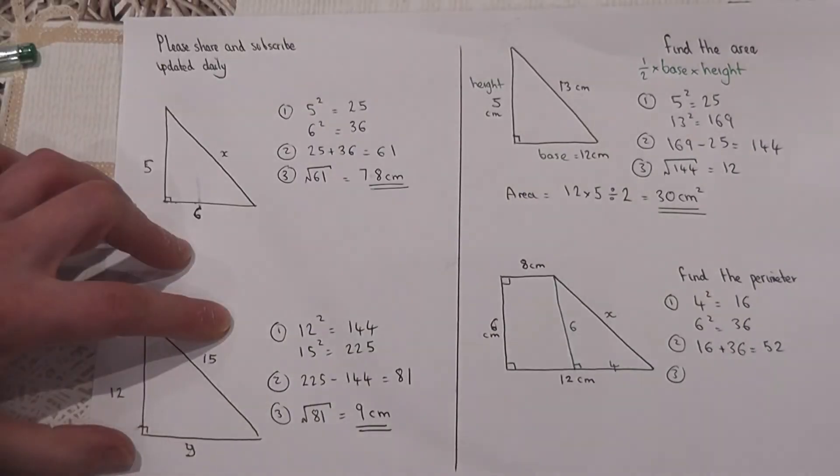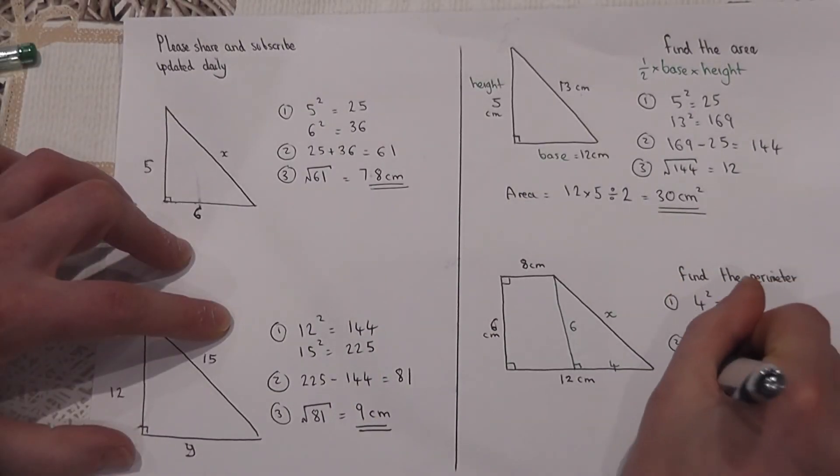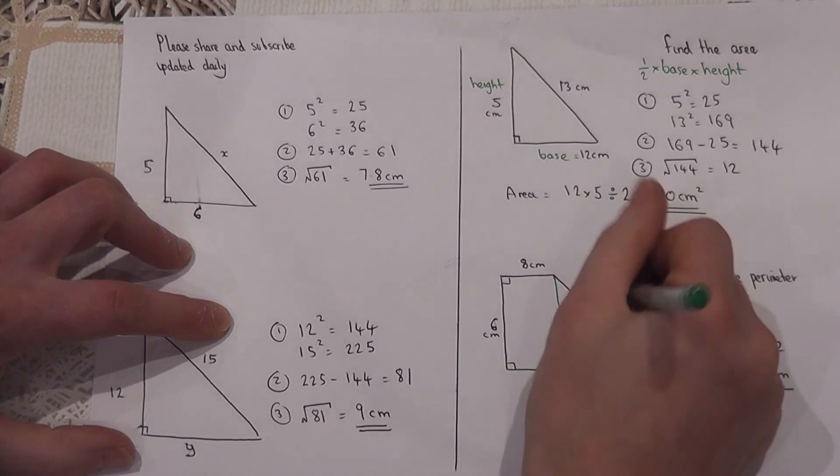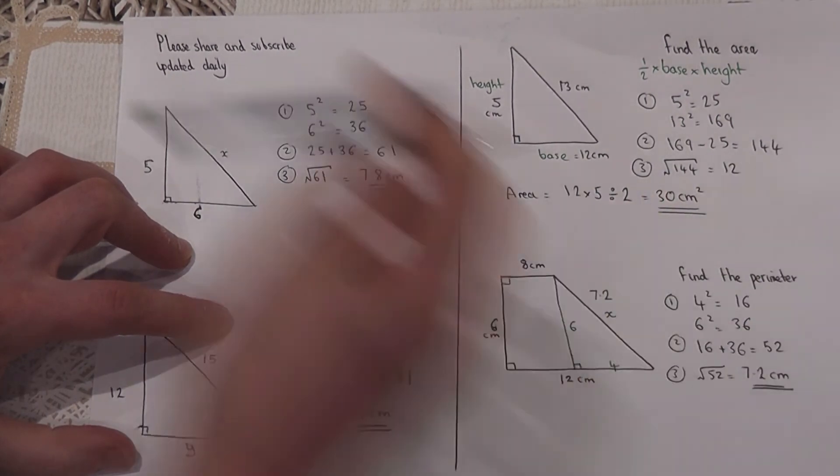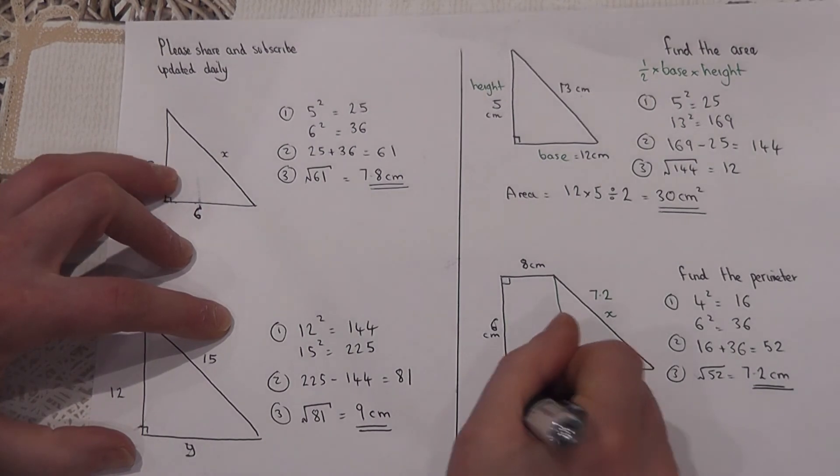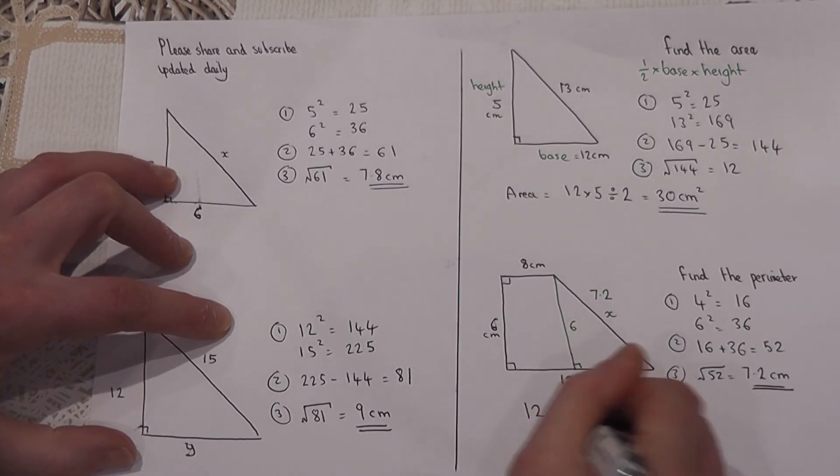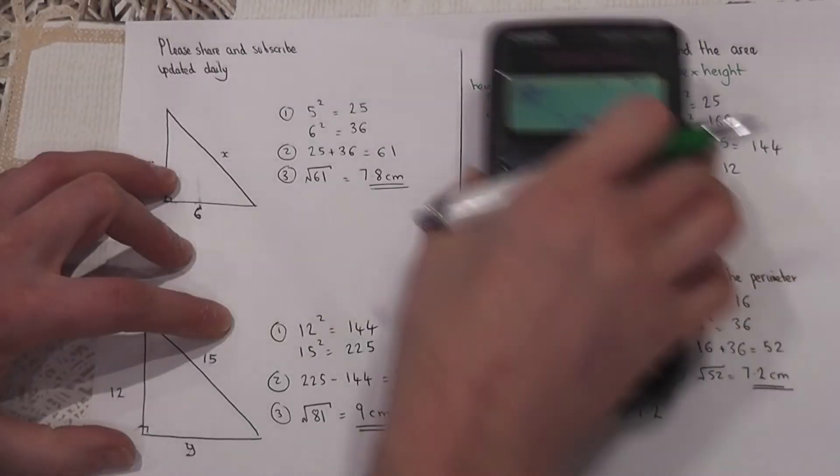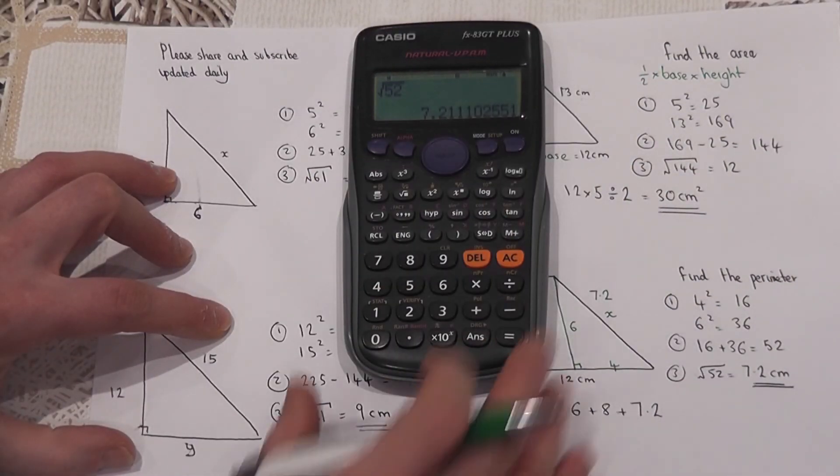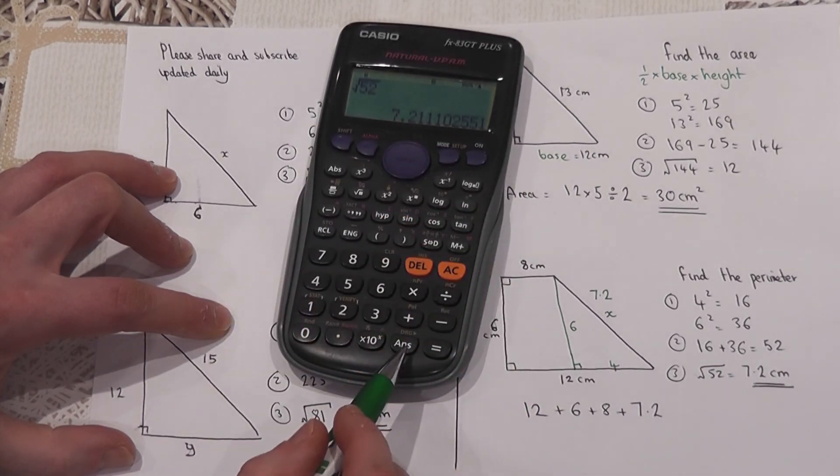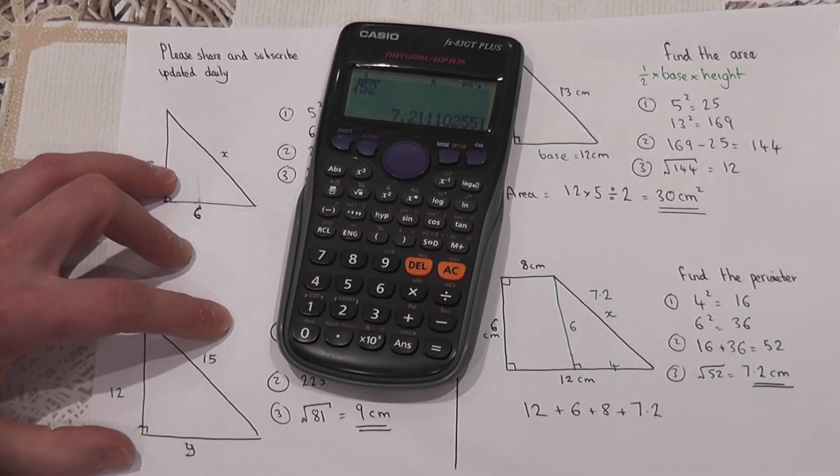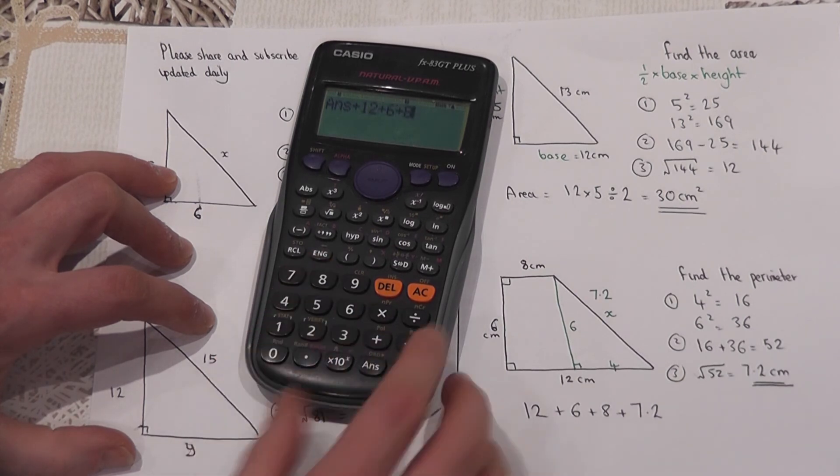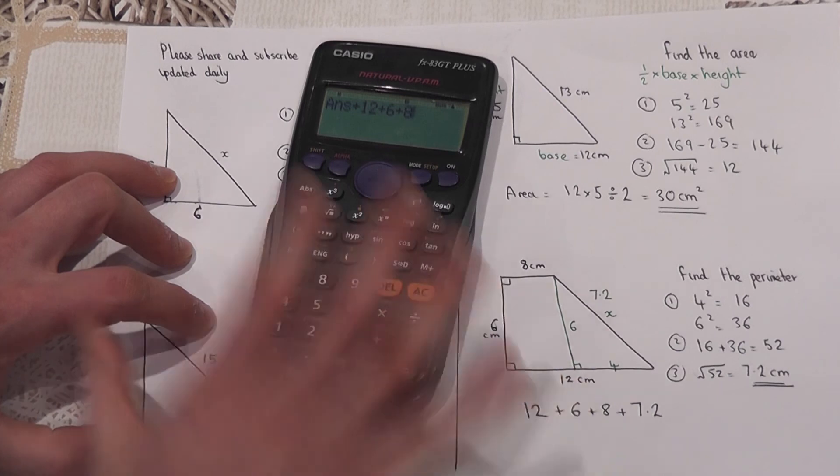That equals 7.2 to one decimal place. So this length here is 7.2. Therefore to find the perimeter I do 12 plus 6 plus 8 plus 7.2. One good hint for examinations for any calculation is that the actual 7.2 is stored in the calculator's answer memory. If this has harder values, I could just use the answer, the 7.2, and then add the 12, the 6, and the 8.